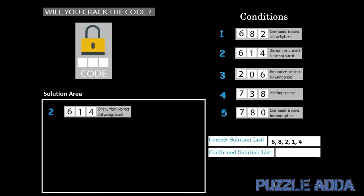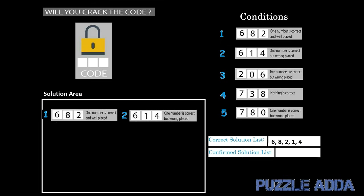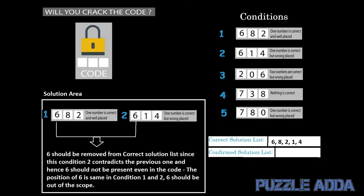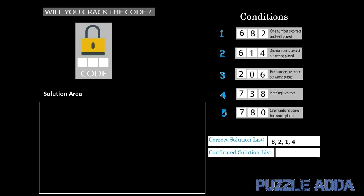Taking both conditions 1 and 2 into the solution area, the digit 6 is common to both. According to condition 1, one number is correct and well placed, and according to condition 2, one number is correct but wrongly placed. If we take digit 6 as the correct and well-placed number in condition 1, it contradicts condition 2. So 6 should not be in our solution set. Now removing 6 from the solution list.